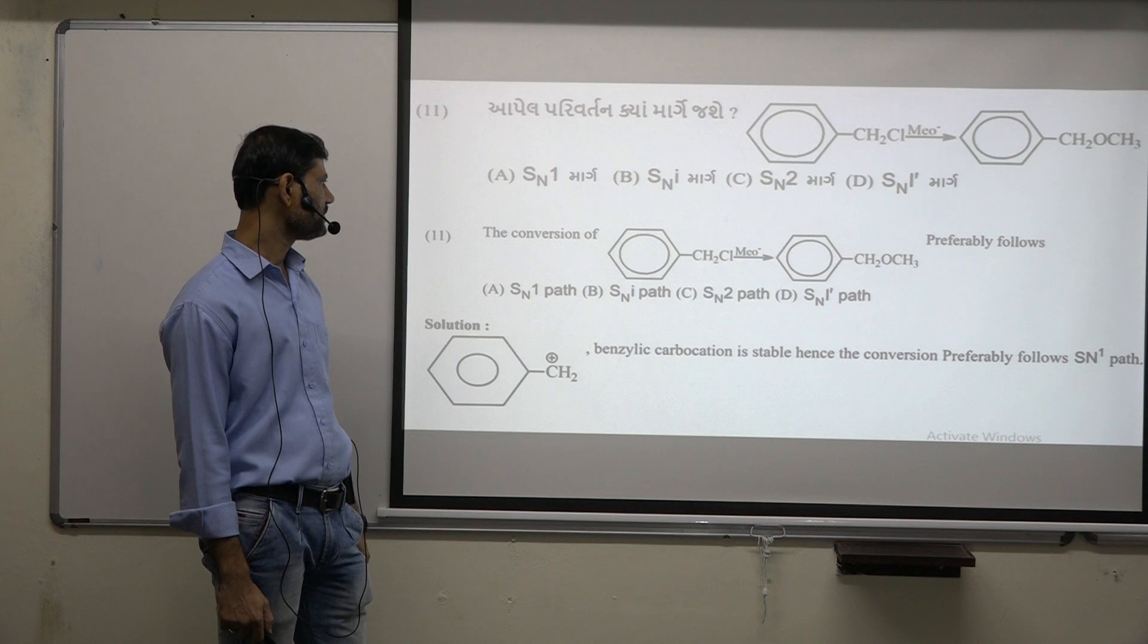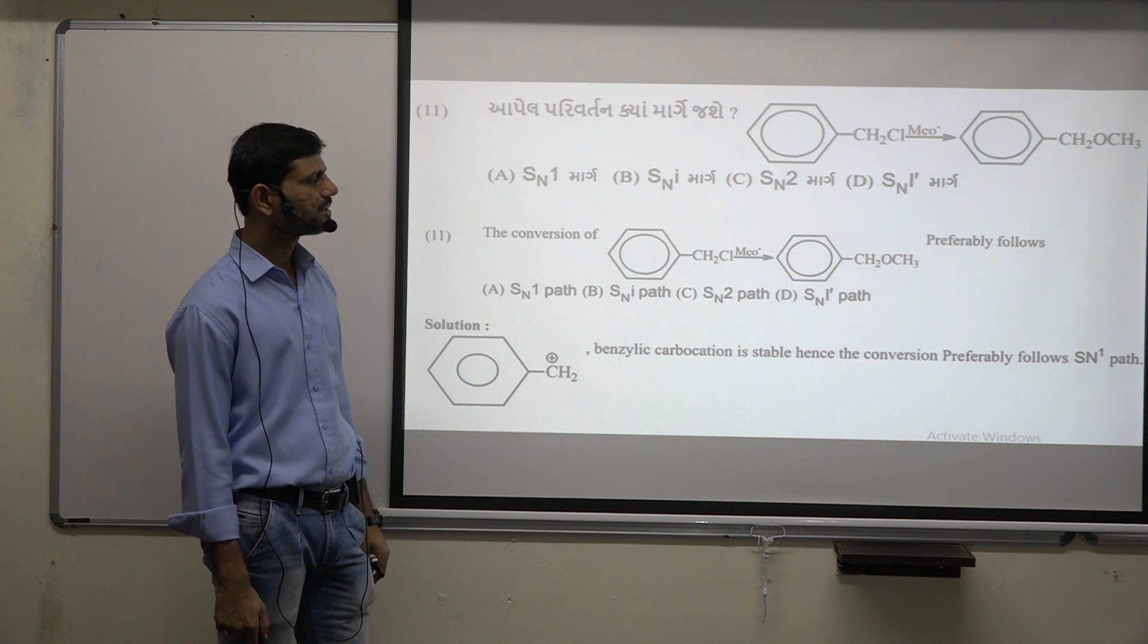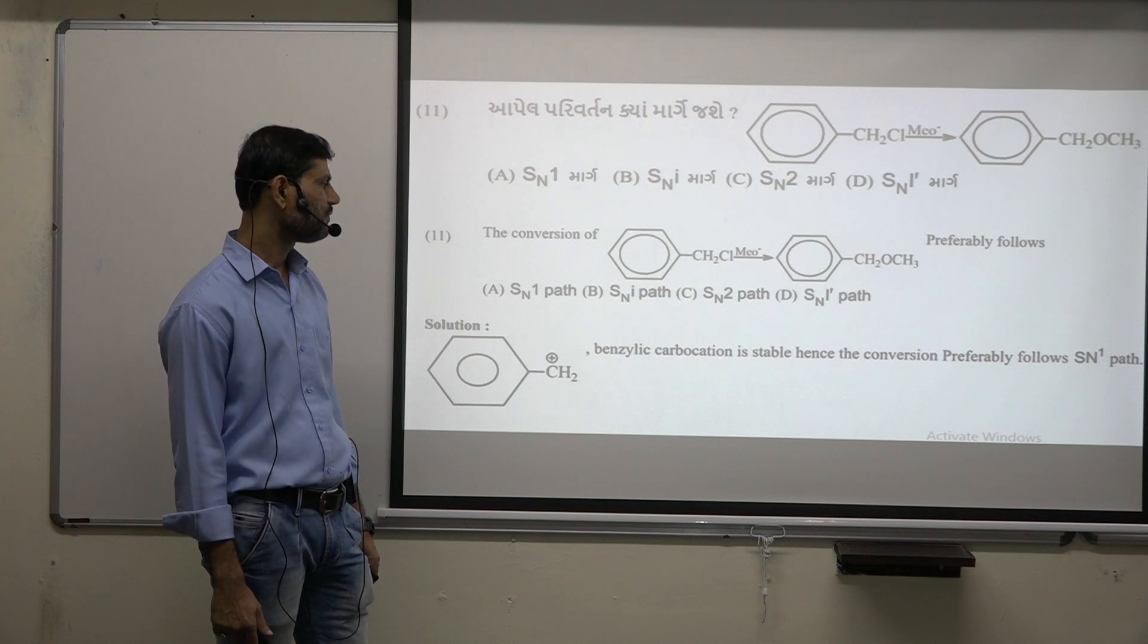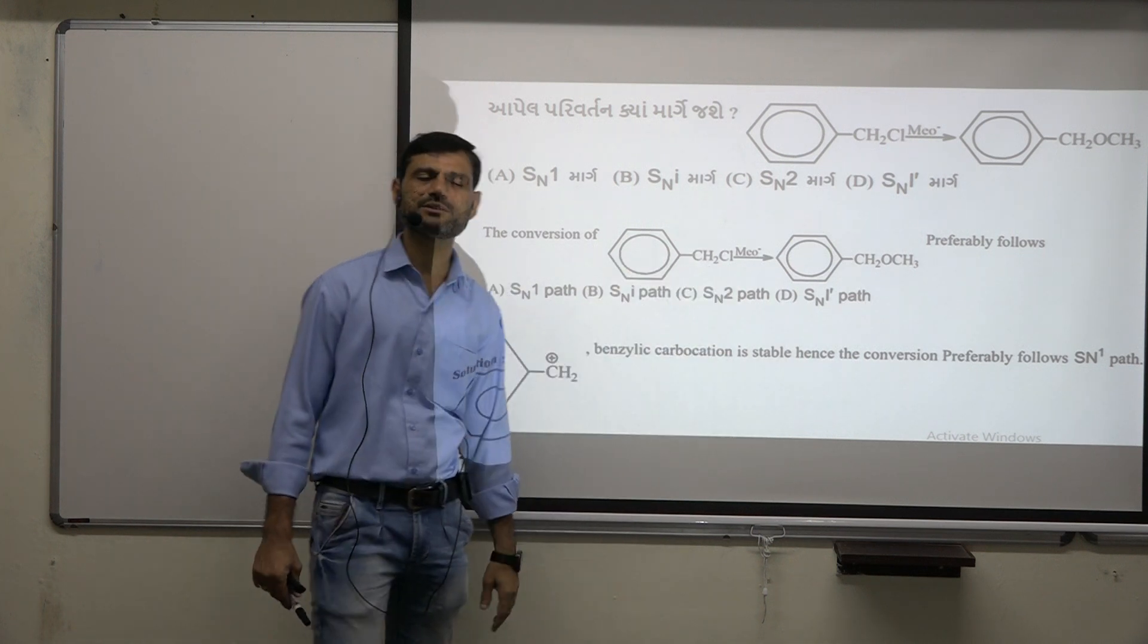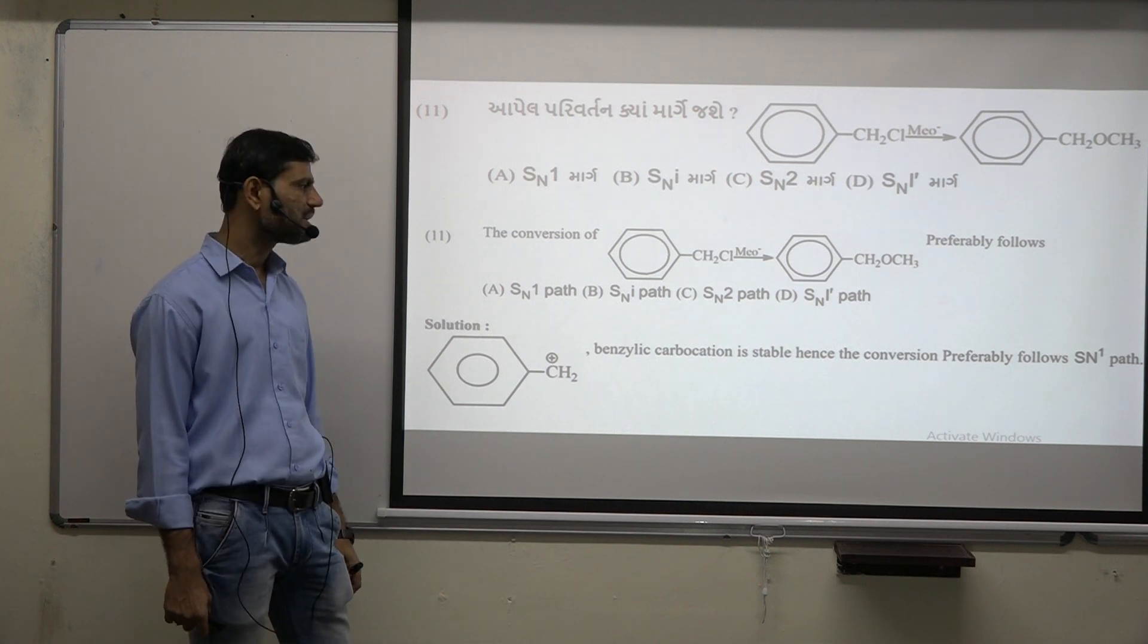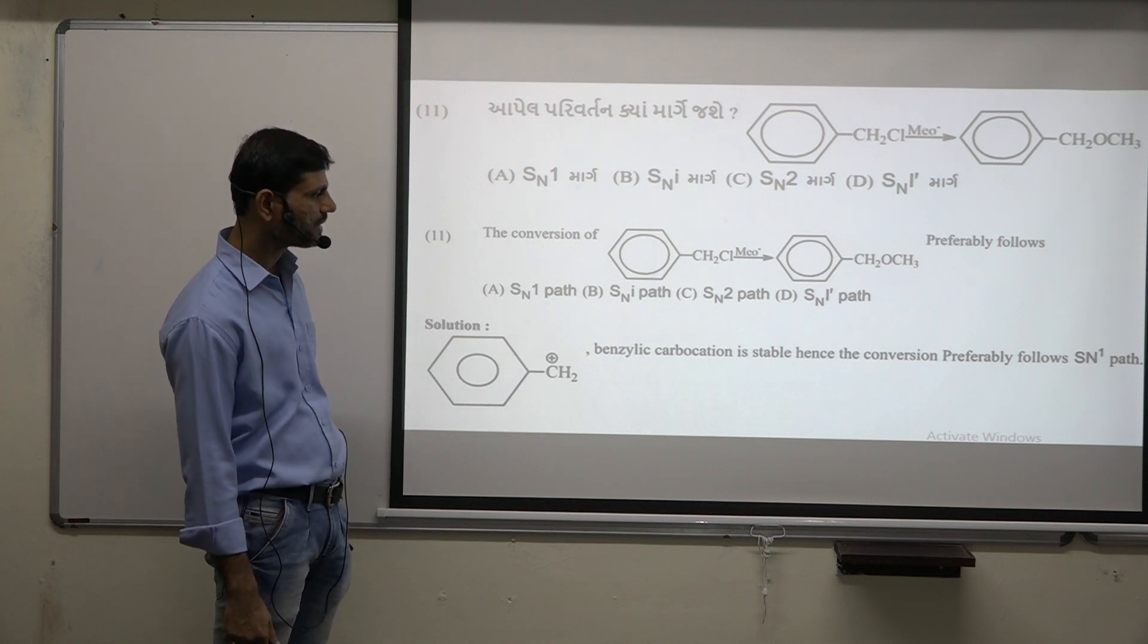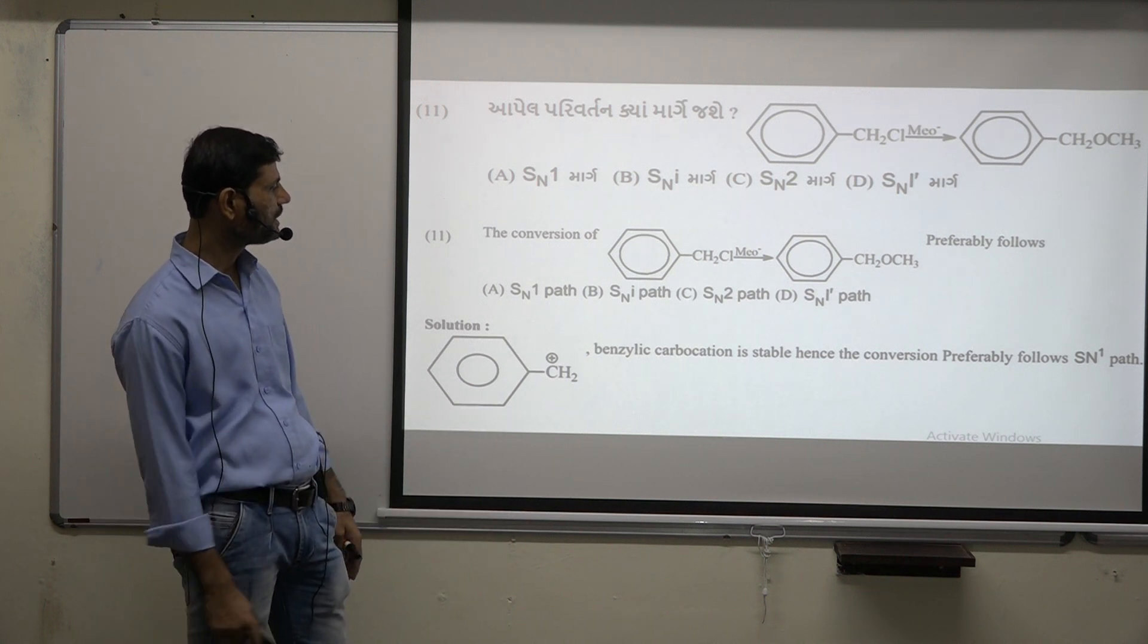The answer to this has a reaction with methoxide ion. It has been benzoyl chloride. If methoxide ion has a reaction, it becomes benzyl carbocation. Benzyl carbocation is stable, hence the conversion preferably follows the SN1 path. This SN1 path follows because of benzyl carbocation. So this is the reaction in the SN1 path.